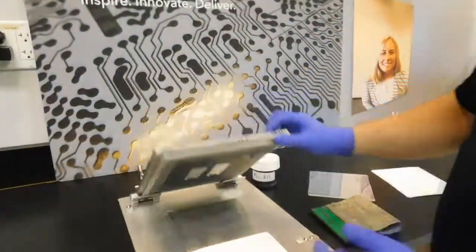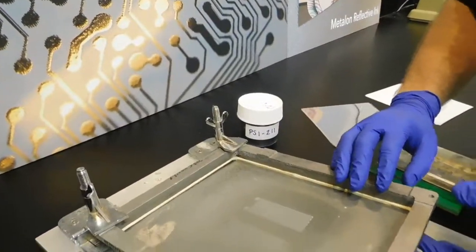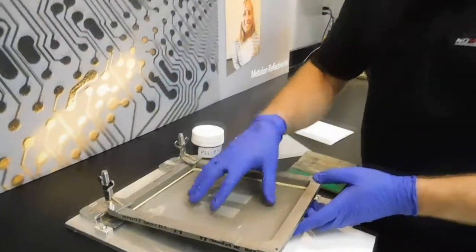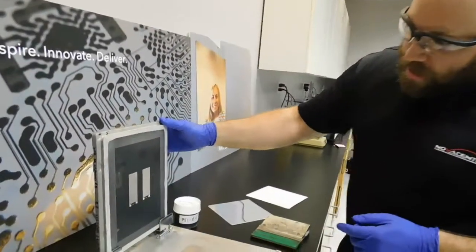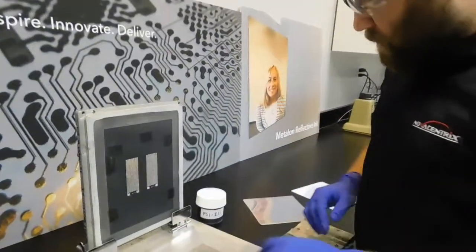If you're not familiar with screen printing, it's based off of a metal screen in which you make the image and the emulsion. You can see it there, and that allows the ink to pass through to make an image.